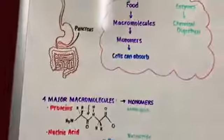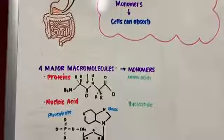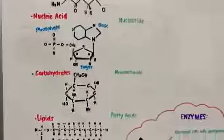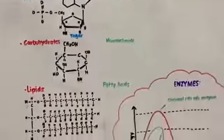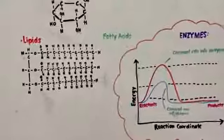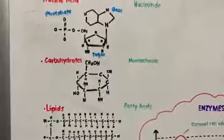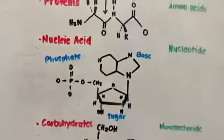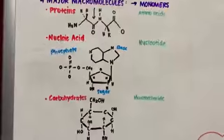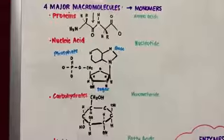The second alimentary canal organ that produces digestive secretions is the small intestine, which produces peptidases, enzymes that break down protein. Lipase is an enzyme that breaks down lipid. And disaccharidases break down carbohydrates. Examples are maltase which breaks down maltose, sucrase which breaks down sucrose, and lactase which breaks down lactose.